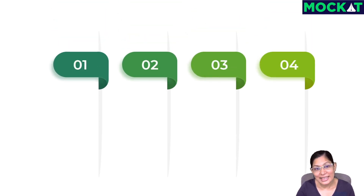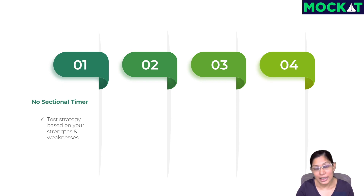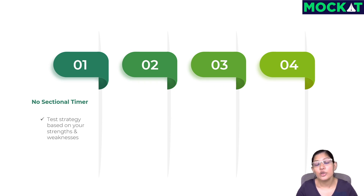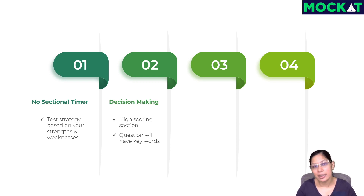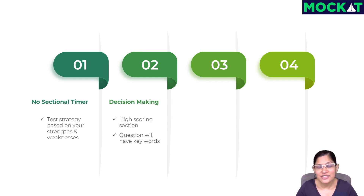Now let's look at key differentiators — what makes ZAT unique. First, no sectional timer: unlike CAT, you can start with whatever's your strong point and give more time to your weaker area to maximize your score. Go in with a test strategy based on your own strengths and weaknesses. Second, decision making — it's not in any other exam. To some extent NMAT and SNAP have a few questions, but ZAT's DM questions are more difficult and there are more of them — 21 questions. A lot of students tend to be scared of this or spend too much time torn between options.